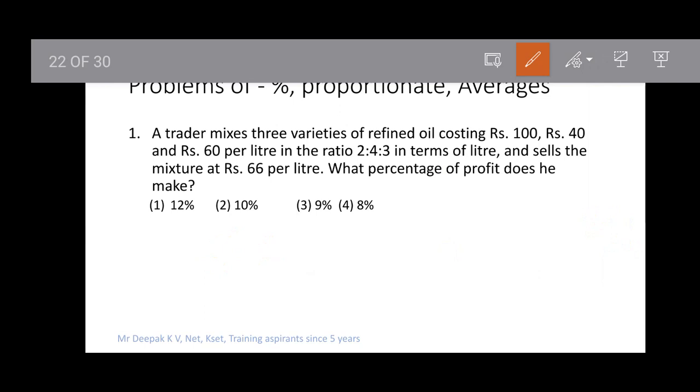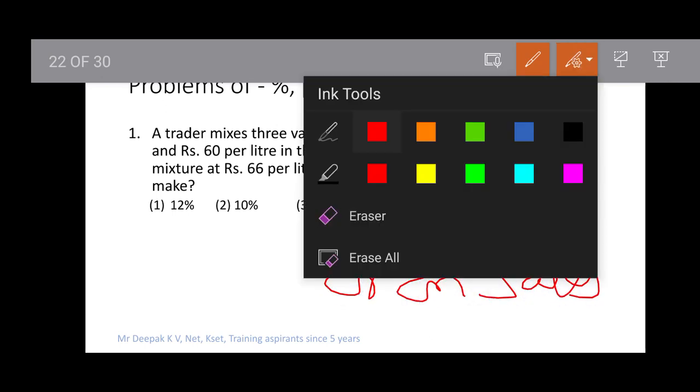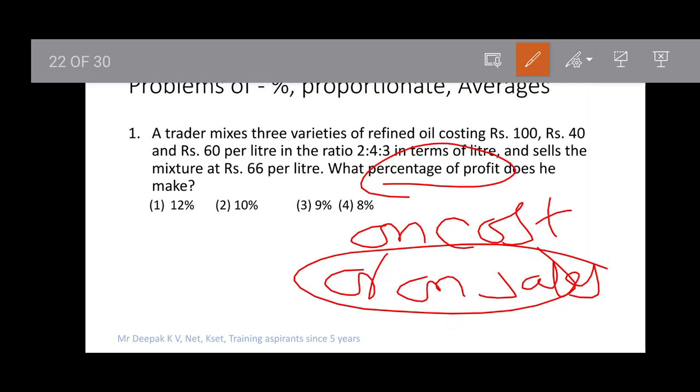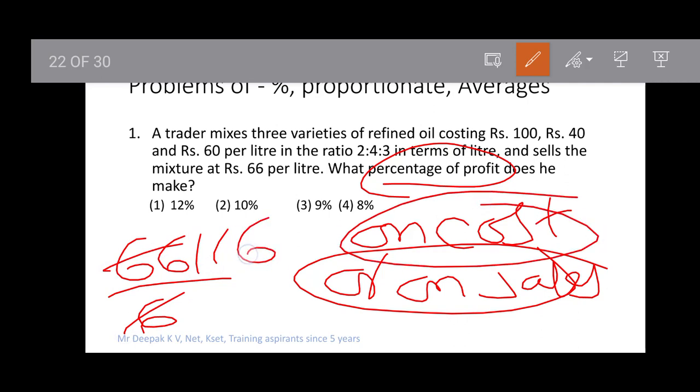Usually, percentage of profit is calculated on cost or on sales. If calculated on sales, 6÷66 would give approximately 9%, which is not in the options. So we calculate on cost: 6÷60 = 10%. Option 2 is our answer.